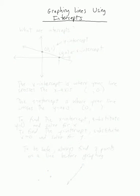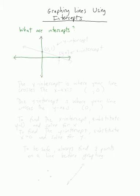We're going to be talking about how to graph lines using intercepts. The first question we have to ask is: what are intercepts? Well, anytime that you have a line — let me go ahead and draw a straight line — and let's say that it crosses the axis at (0, 1) and over here at (4, 0). Notice that this line crosses the y-axis at this point and the x-axis at this point (4, 0). This would be called the y-intercept of the line, and this would be called the x-intercept of the line.